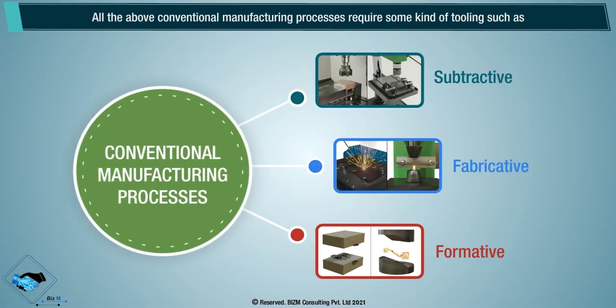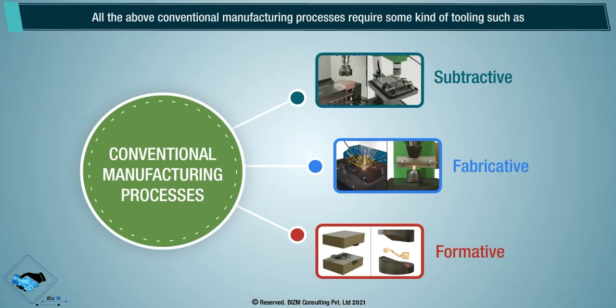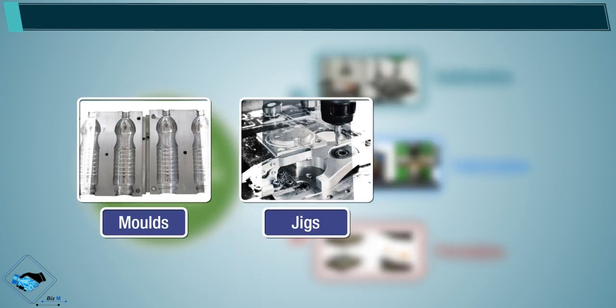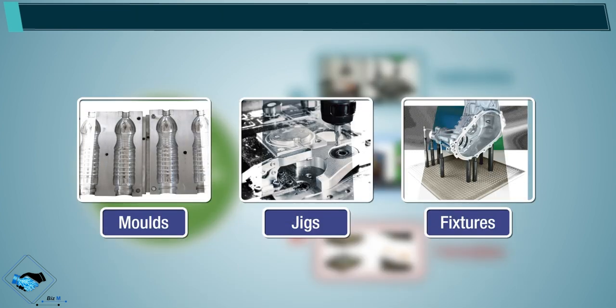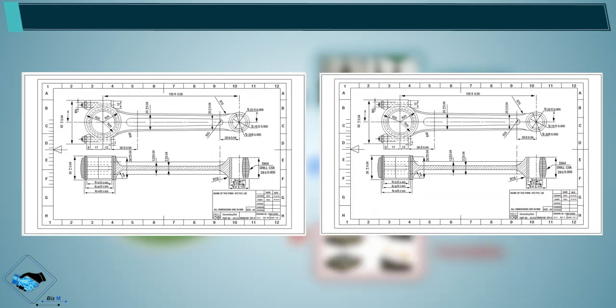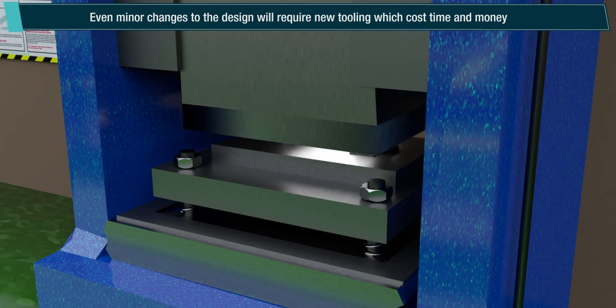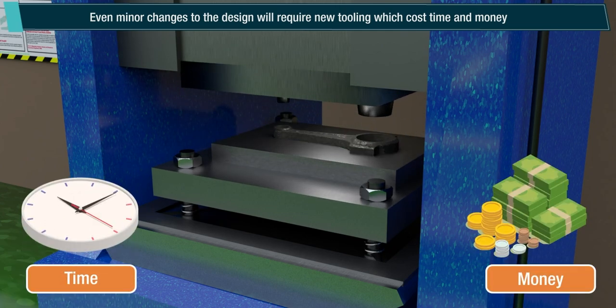All conventional manufacturing processes require some kind of tooling such as molds, jigs, and fixtures. Even minor changes to the design will require new tooling, which costs time and money.